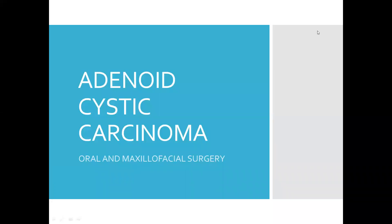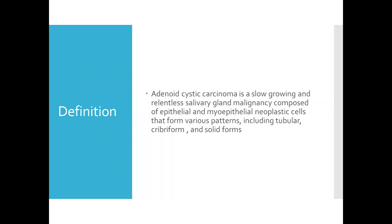Hello everyone, today we'll be talking about adenoid cystic carcinoma. Adenoid cystic carcinoma is a slow-growing and relentless salivary gland malignancy composed of epithelial and myoepithelial neoplastic cells that form various patterns, including tubular, cribriform, and solid forms.